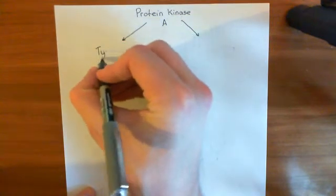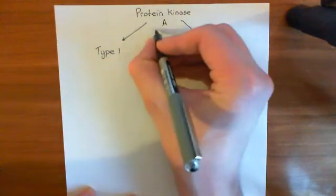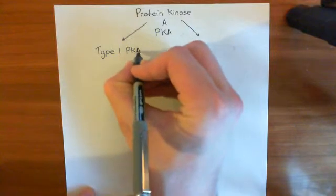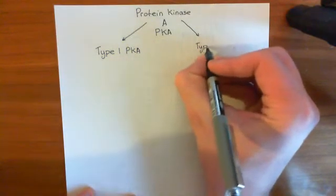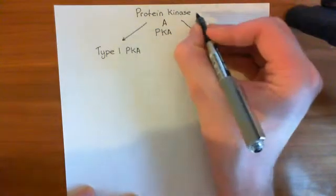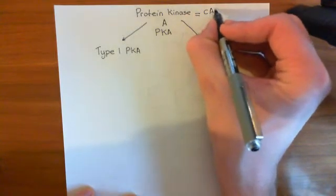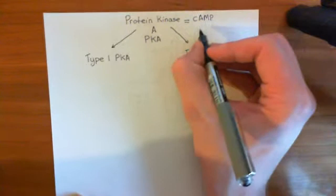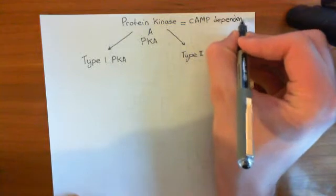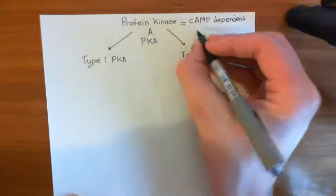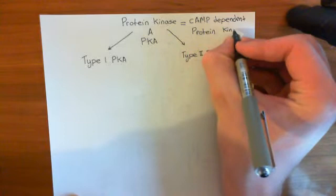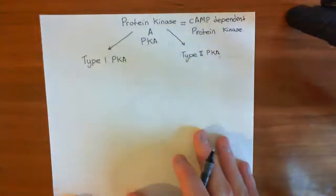There is type 1 and type 2 protein kinase A. I'll abbreviate protein kinase A from now on to just PKA. Pompous scientific articles will refer to protein kinase A as the cyclic AMP-dependent protein kinase, rather than protein kinase A — that terminology is often used in research articles. But we'll use protein kinase A, abbreviated to PKA, from now on.